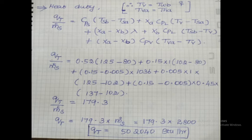Substituting all values: initial moisture content 0.15, final moisture content XB equals 0.005. CPB, the specific heat of vapor, is taken from Appendix 14 — from the graph of specific heat of gases and vapor. From that graph, CPB equals 0.45.